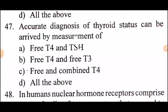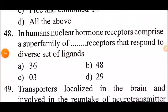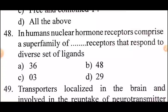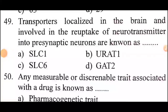Question: accurate diagnosis of thyroid status can be arrived at by measurement of? In humans, nuclear hormone receptors comprise a superfamily of receptors that respond to a diverse set of ligands. Answer: option B, 48 receptors.